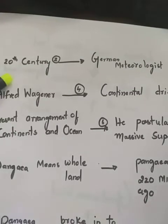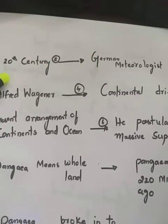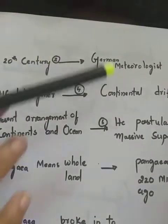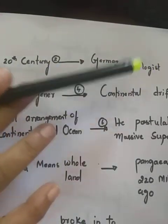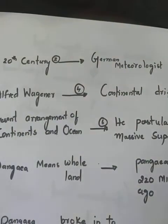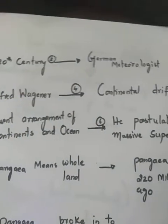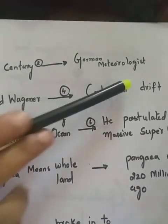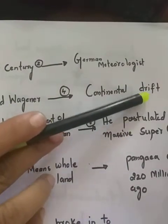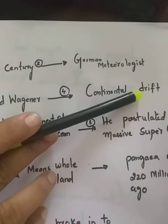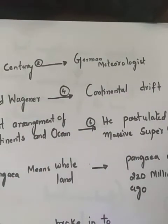What are you observing children? See, again one more flow chart. In the early 20th century, a German meteorologist, his name is Alfred Wegener. What he introduced? He introduced continental drift theory. What he described in this theory?